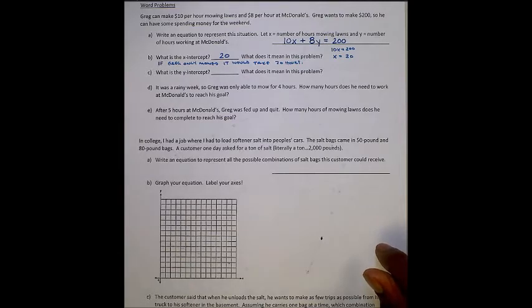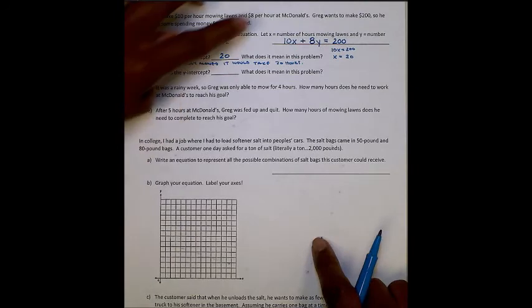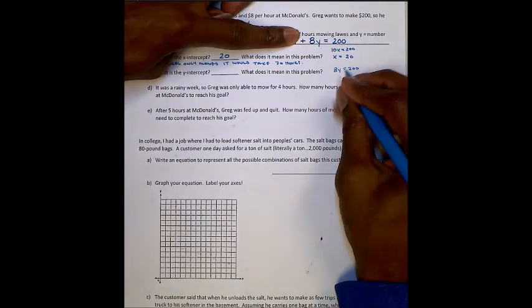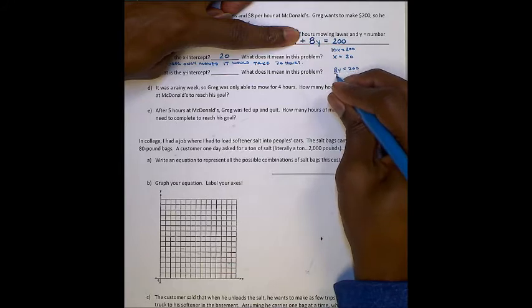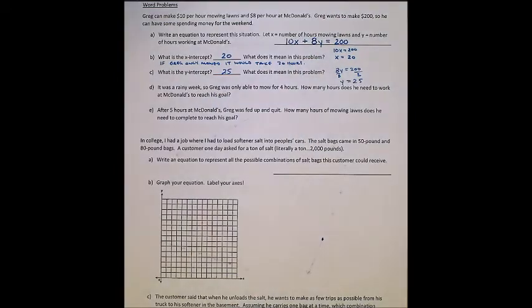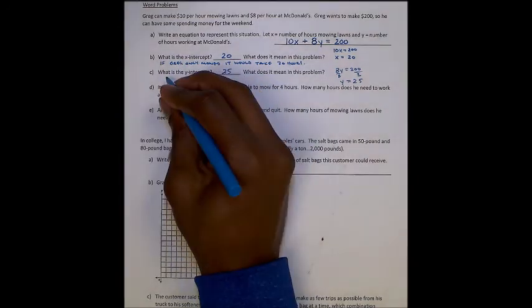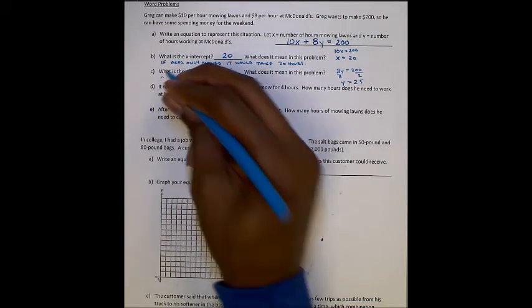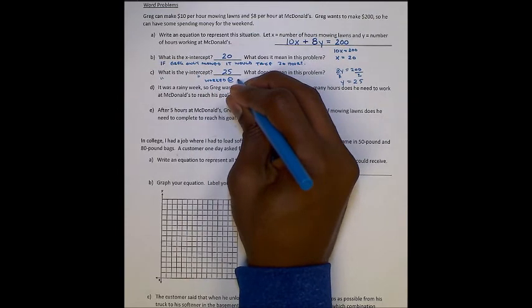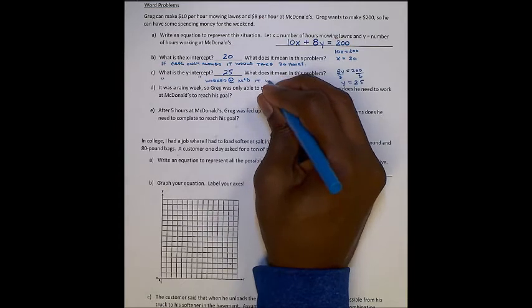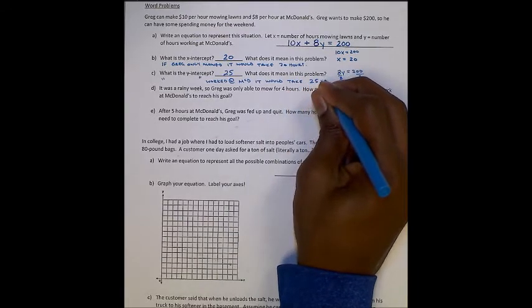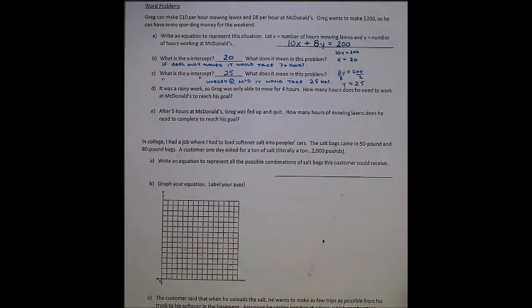And what does it mean in this problem? In this problem, that means if he only mowed lawns, he'd spend... or 20 hours. Sorry. If Greg only mowed lawns, it would take 20 hours. Remember, 20 hours to make $200, not to mow all the lawns. What is the y-intercept? The y-intercept, remember, we find that by covering up x and solving y. So we cover up x. We have 8y equals 200. That would be 25, divide by 8. So y equals 25.